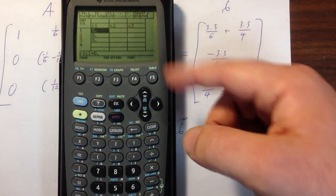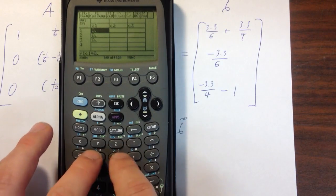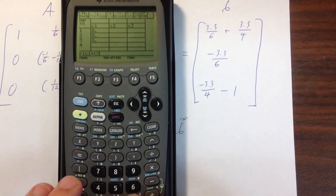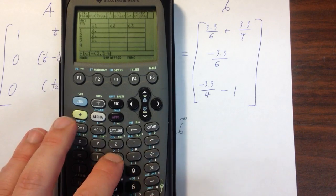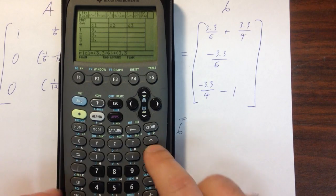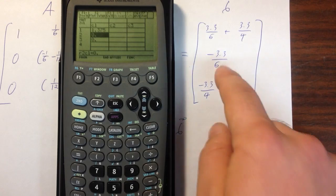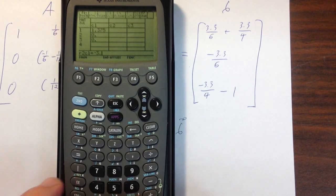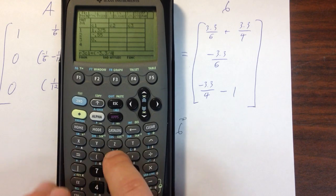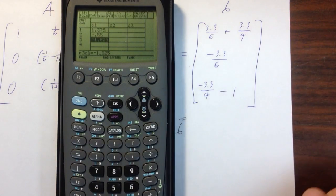Now I've got my editor where I can put in these values. For the first entry, I've got 3.3 over 6 plus 3.3 over 4. Notice I'm not simplifying anything. And then the next one, I've got minus 3.3 over 6. And then the very last entry, I've got minus 3.3 over 4 minus 1. That's it. I've put in AX equals B into my calculator.